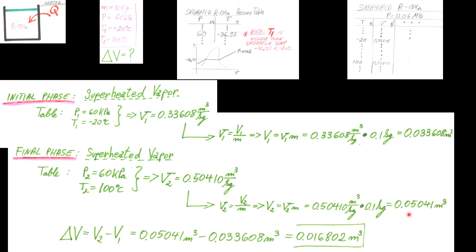And now all there is left to find the change in volume: V2 minus V1. That's going to give us right here 0.016802 meters cubed.